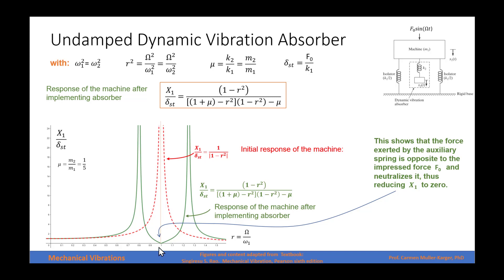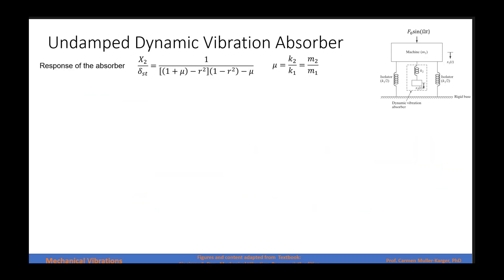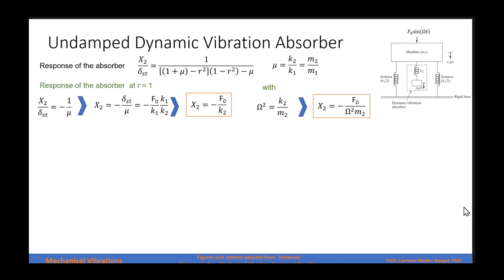This graph is done for mu = 1/5, meaning the mass of the machine is 5 times the mass of the absorber. Let's now see the graph for the amplitude of the absorber. We found that the amplitude is described by this equation. If we make r = 1, those two terms cancel, and the response over the static deflection equals 1/mu, where mu is the ratio of absorber to machine characteristics.